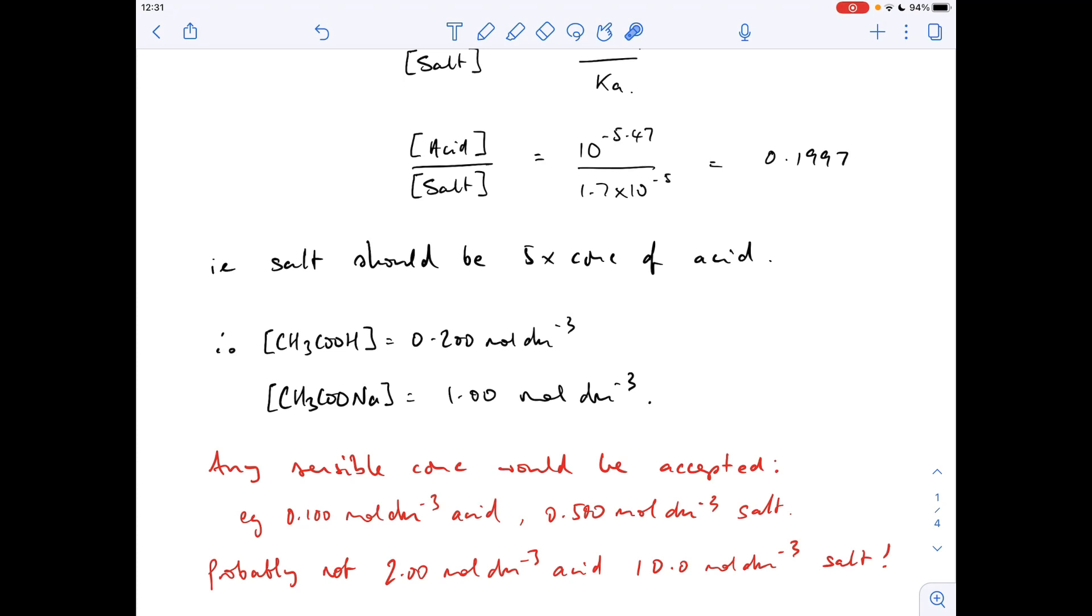You could go for something like 0.1 acid, 0.5 salt - that's still going to give you the same pH. I don't think I'd go for something like 2 and 10; 10 is a bit concentrated, so I'd avoid that.